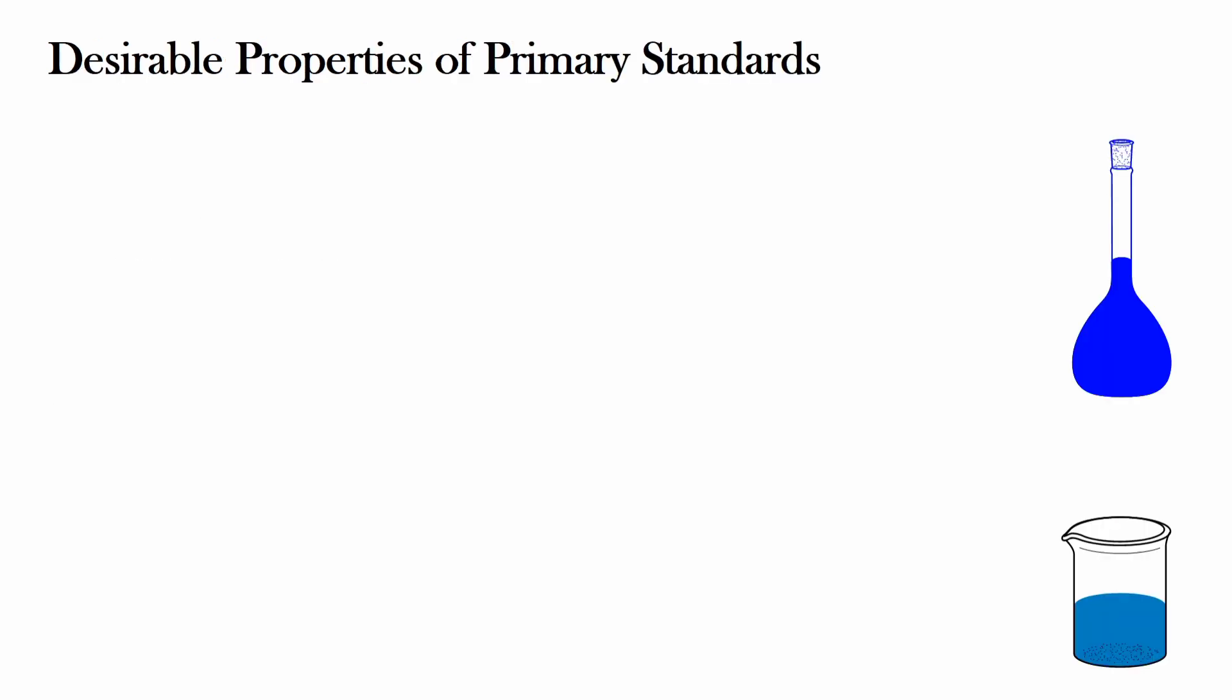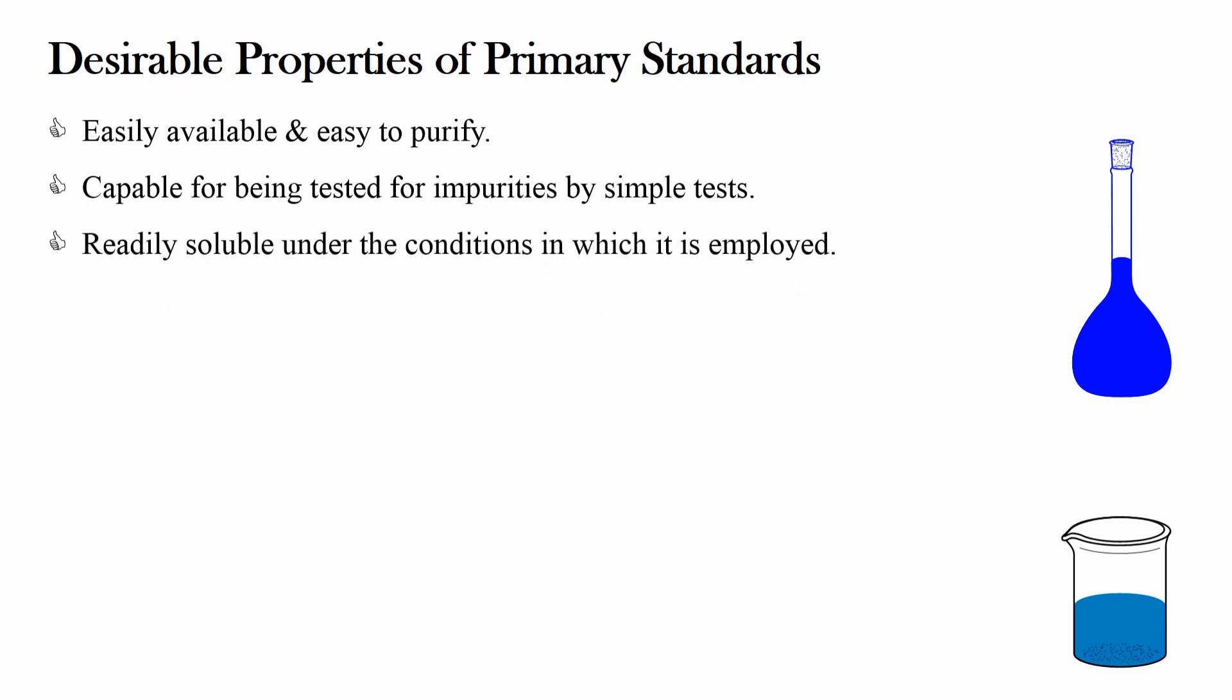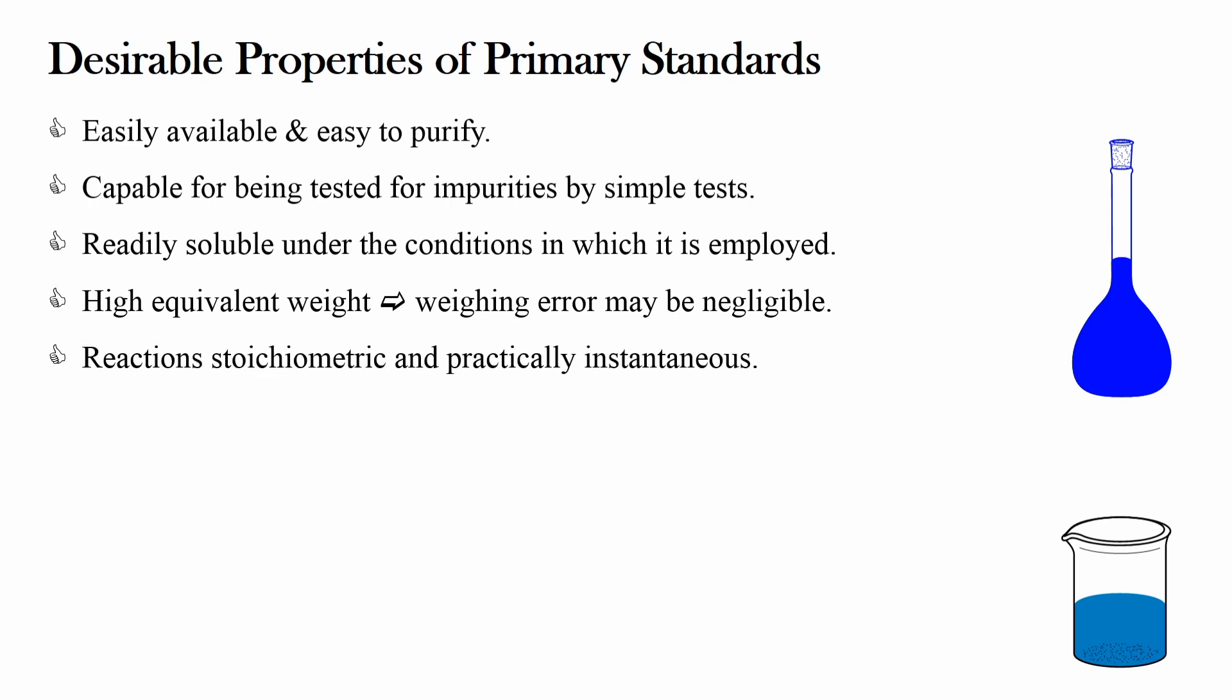Now, desirable properties of primary Standard. The primary Standard should be easily available and easy to purify. It should be capable of being tested for impurities by simple test. It should be readily soluble under the condition in which it is employed. It has high equivalent weight so that the weighing error may be negligible. Its reaction should be stoichiometric and practically instantaneous.